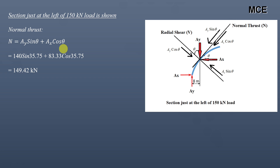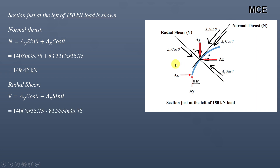For the radial shear, Ay cos θ acts downward and Ax sin θ acts upward, so we take their difference. Radial shear = Ay cos θ − Ax sin θ. Substituting Ay = 140 kN, Ax = 83.33 kN, and θ = 35.75°: Radial shear = 140 × cos(35.75°) − 83.33 × sin(35.75°) = 64.93 kN.